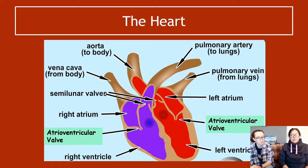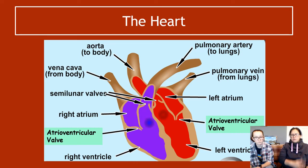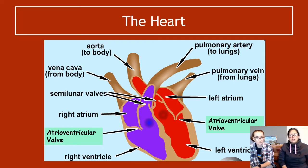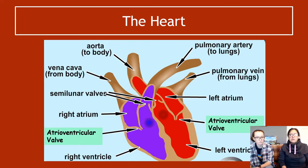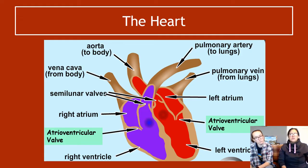If asked in an exam what is the purpose of an AV valve, you have to be more specific than just 'stops the backflow of blood.' For example, for the valve on the right side of the heart, you'd say it stops the backflow of blood from the right ventricle to the right atrium. The second new thing is the semilunar valves, or SL valves — the valves at the exit of the arteries of the heart. These stop the backflow of blood from the aorta to the left ventricle, for example.